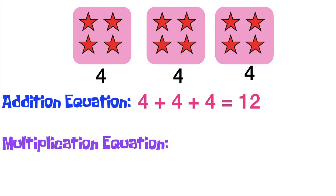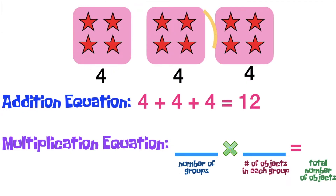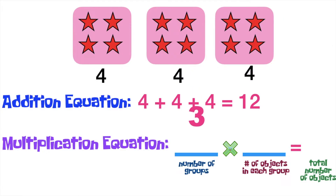So now, let's write the multiplication equation. Always remember, the first factor is the number of groups, while the second factor is the number of objects in each group, and the answer or the product is the total number of objects. So let's find how many groups we have. Let's count it together: one, two, three! So that means our first factor is three. How about the second factor? How many objects do we have in each group? Very good, children! We have four stars in each group.